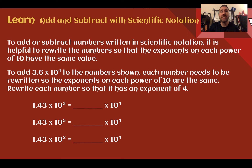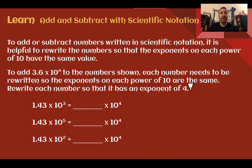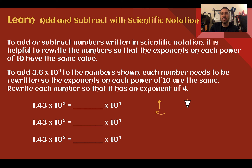Let's learn: add and subtract with scientific notation. To add or subtract numbers written in scientific notation, rewrite the numbers so the exponents on each power of 10 have the same value. For example, to add 3.6 times 10 to the 4th to another number, each number needs to be rewritten so the exponents on the power of 10 are the same. They need to have the same exponent value — that's very important when adding and subtracting.